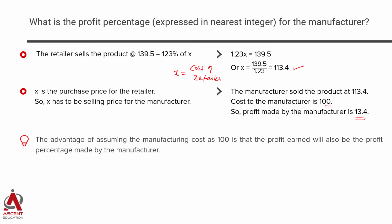The biggest advantage of assuming the cost is 100 is that the profit made by the manufacturer — 13.4 — actually ends up becoming the percentage profit. Because percentage profit equals profit divided by cost price into 100. In our case, 13.4 divided by 100, into 100 — the 100s cancel out. So assuming the cost is 100 in Profit and Loss always has this big advantage.